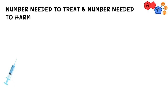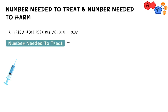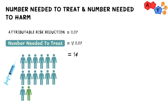Let's take the same previous examples and work out the numbers to make it clear. In our example about vaccines, the absolute risk reduction was 0.07. Therefore, our number needed to treat is going to be 1 over 0.07, which equals roughly 14.3. But since we can't treat 14.3 people, let's round it down to 14. The proper interpretation is that we would need to vaccinate roughly 14 people in order to benefit one person compared to those who are unvaccinated.